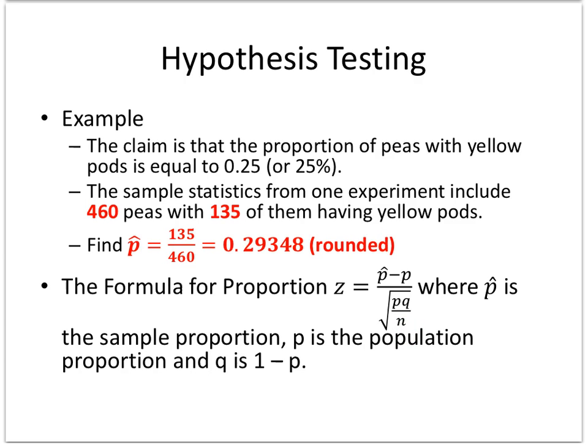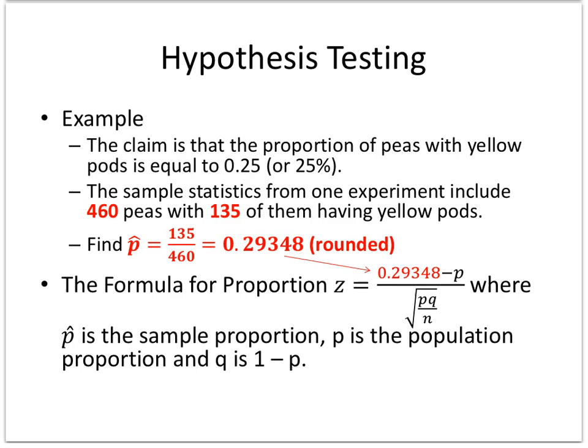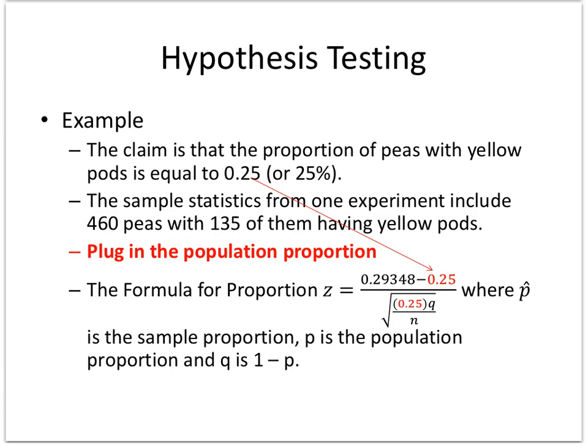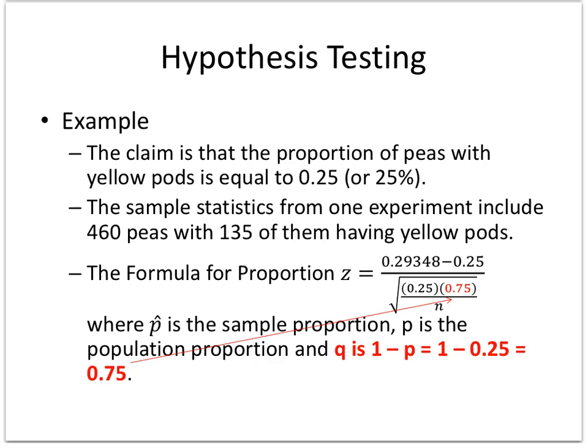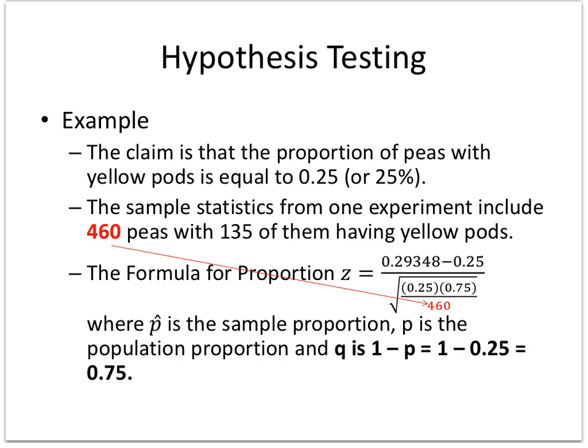Of course, n is your sample size. So let's first find P hat by 135 out of 460. I would try to keep as many decimal places as you can, holding them in the calculator and reusing the answer so you won't get a mistake from rounding at the end. So I plug that in for P hat, the P is given as 0.25, Q again is 1 minus 0.25 or 0.75, and finally n is 460.